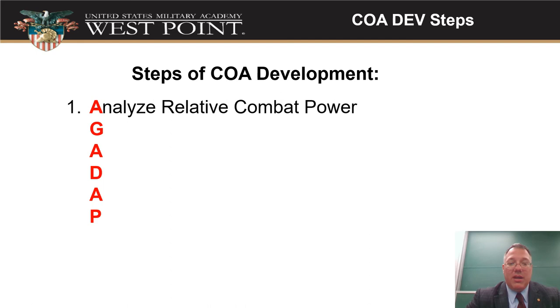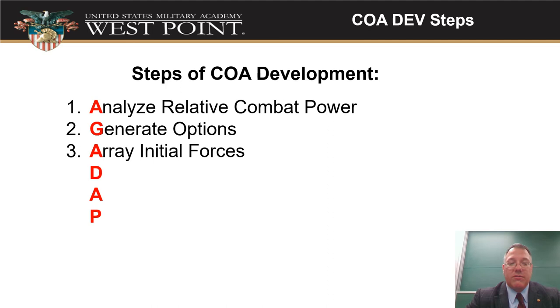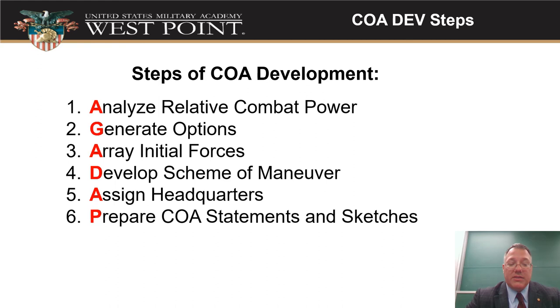To go back: we've got AGADAP. Step one, analyze relative combat power. Step two, generate your options. Step three, array of initial forces. Step four, develop a scheme of maneuver. Step five, assign your headquarters. And step six, prepare COA statement and sketches. AGADAP — get to know it. This is what we're going to be going through for the rest of this block on paragraph three.